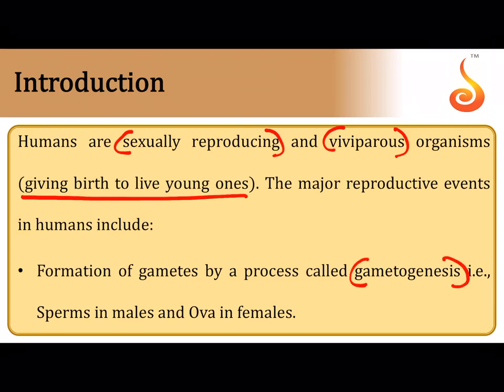Gamete formation happens in the respective gonads. In the testis of the male, there is production of the sex cell or gamete which is the sperm, and in the ovary of the female there is production of the sex cell or gamete which is the ovum. In both sexes, the process of gametogenesis takes place.